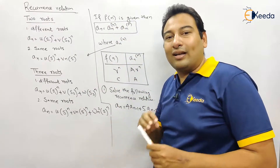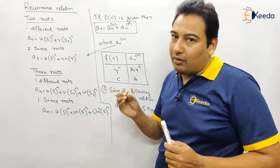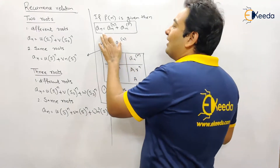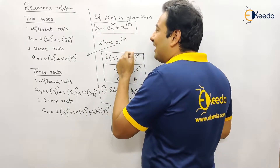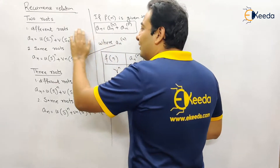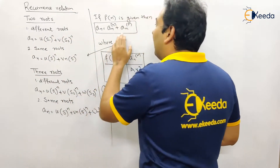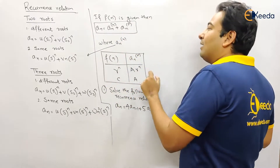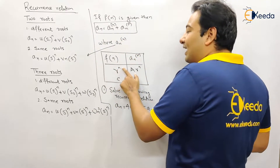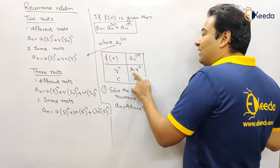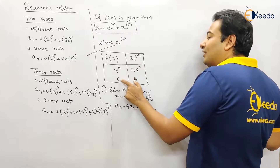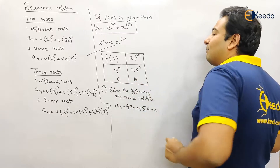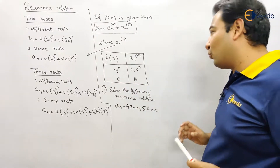If f(n) is given in the problem, then the complete solution is a_n = a_n(h) + a_n(p), where a_n(h) is the homogeneous solution and a_n(p) is the particular solution. For finding a_n(p), a table is used: if f(n) is r^n, then a_n(p) = A·r^n; if f(n) is a constant, then a_n(p) = A.